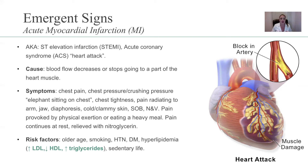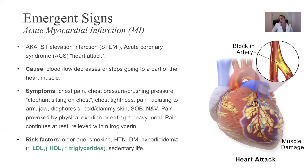Symptoms include chest pain, chest pressure, crushing pressure like an elephant is sitting on the chest, chest tightness, pain radiating to the arm, to the jaw, diaphoresis — the skin is cool and clammy. The body's telling you something really bad is happening. Shortness of breath, nausea, vomiting. The pain is provoked by physical exertion — going up the stairs, your body is not getting blood to the heart. It could also be provoked by a heavy meal. Pain continues at rest and it's relieved with nitroglycerin.